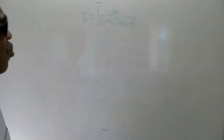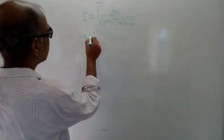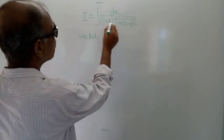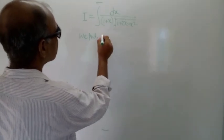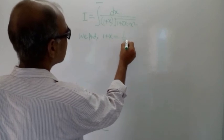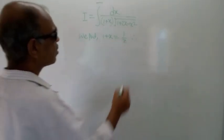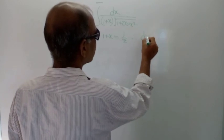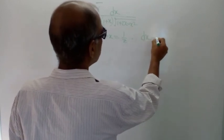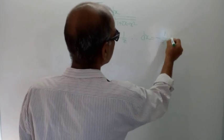To solve this problem we put 1 plus x equal to 1 by z. Now differentiating both sides, we get dx is equal to minus 1 by z squared dz.